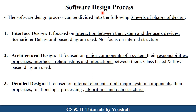The next one is the software design process. Basically, this process is divided into three levels: first, interface design; second, architectural design; and third, detailed design. Here we just take an overview of this design process — in next sessions we will discuss all these processes in detail. The first one is interface design. Interface design focuses on the interaction between the system and user device. For example, when we use WhatsApp, we just use the front-end interface and don't know what happens exactly in the background. So, scenario and behavioral-based diagrams like use case diagram and activity diagram are used in interface design.